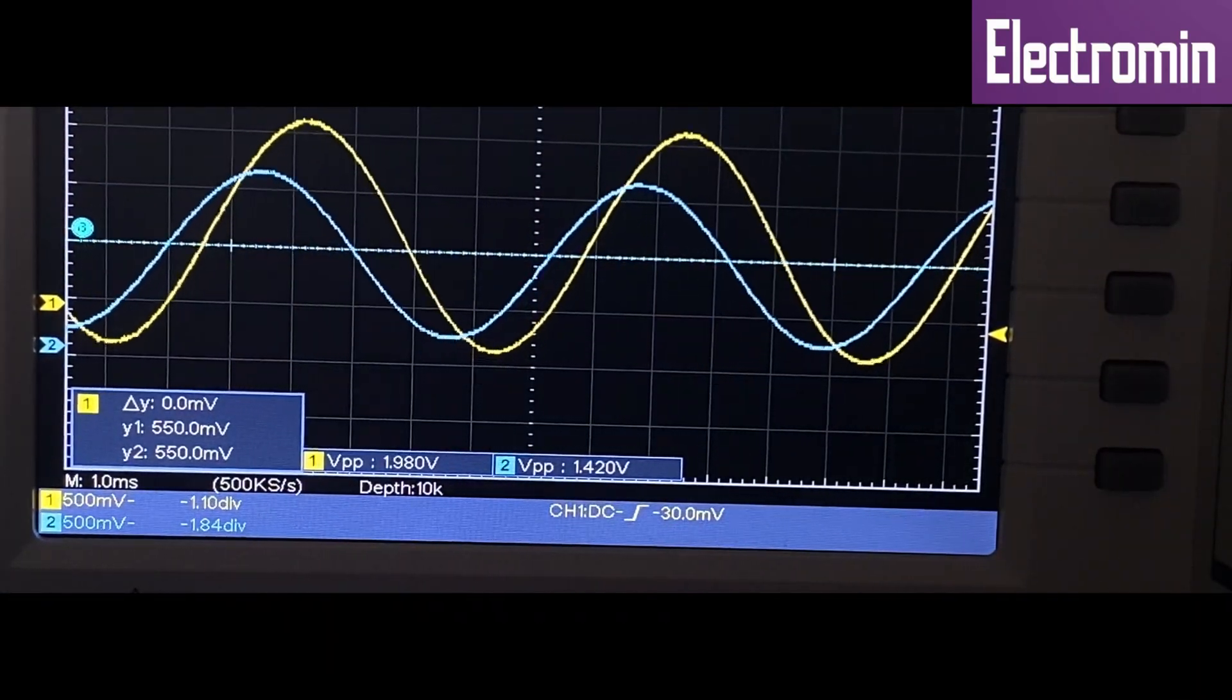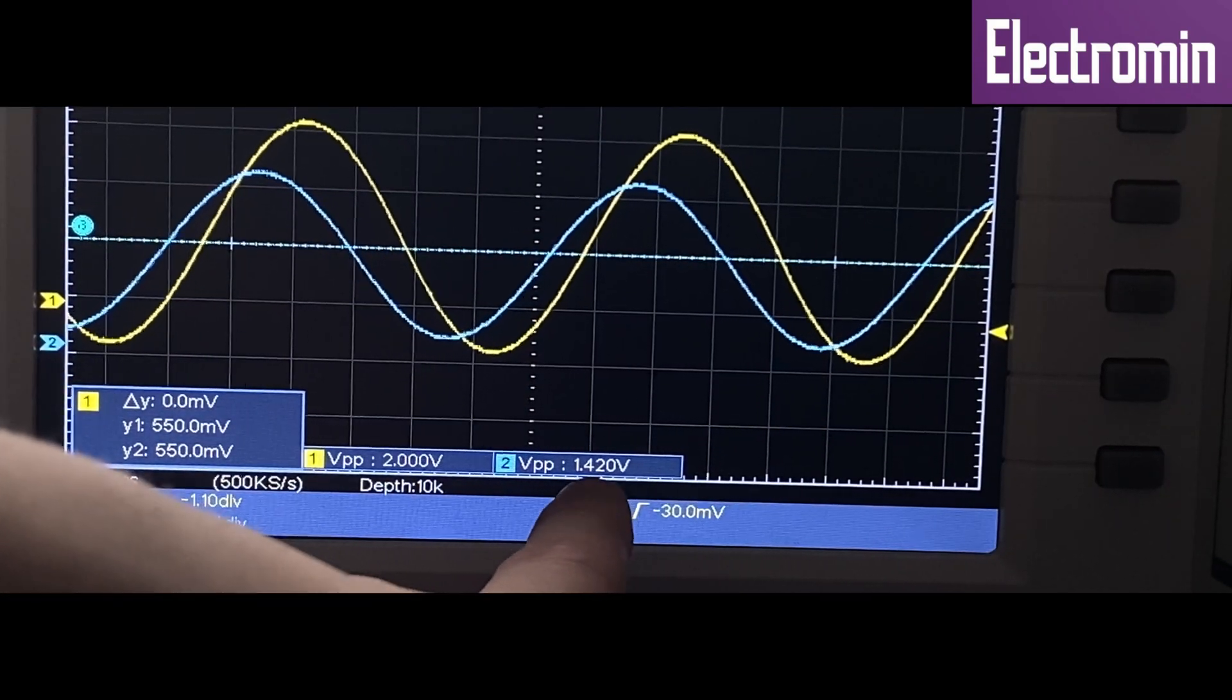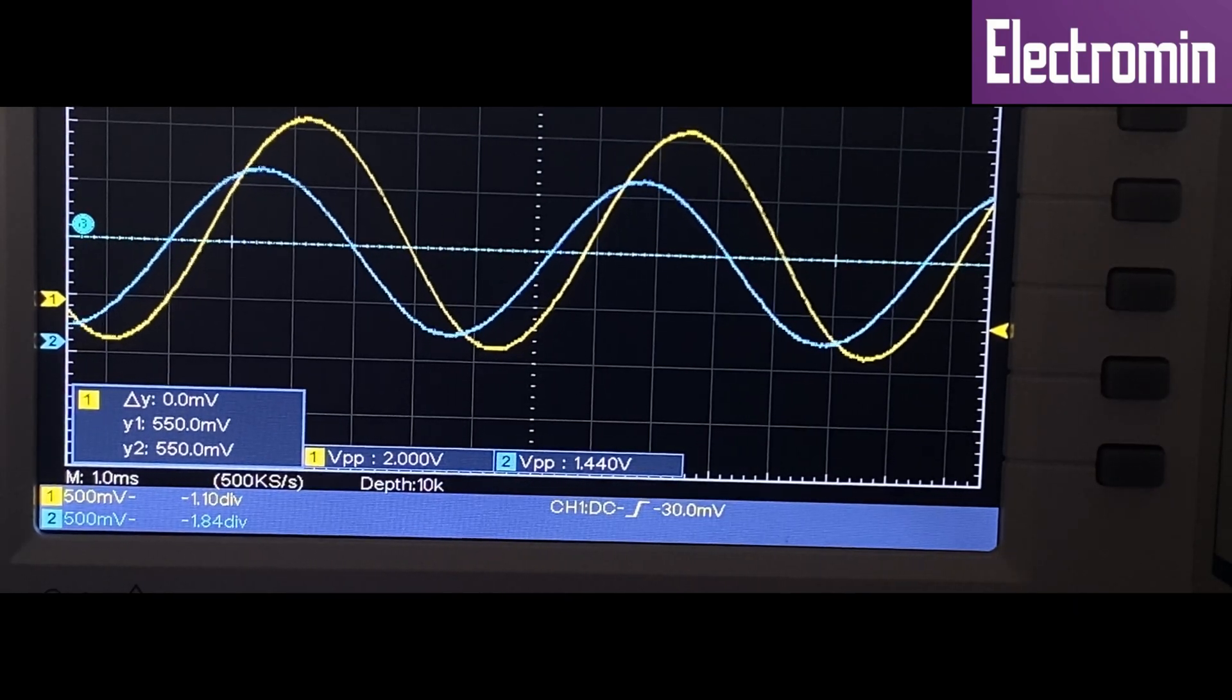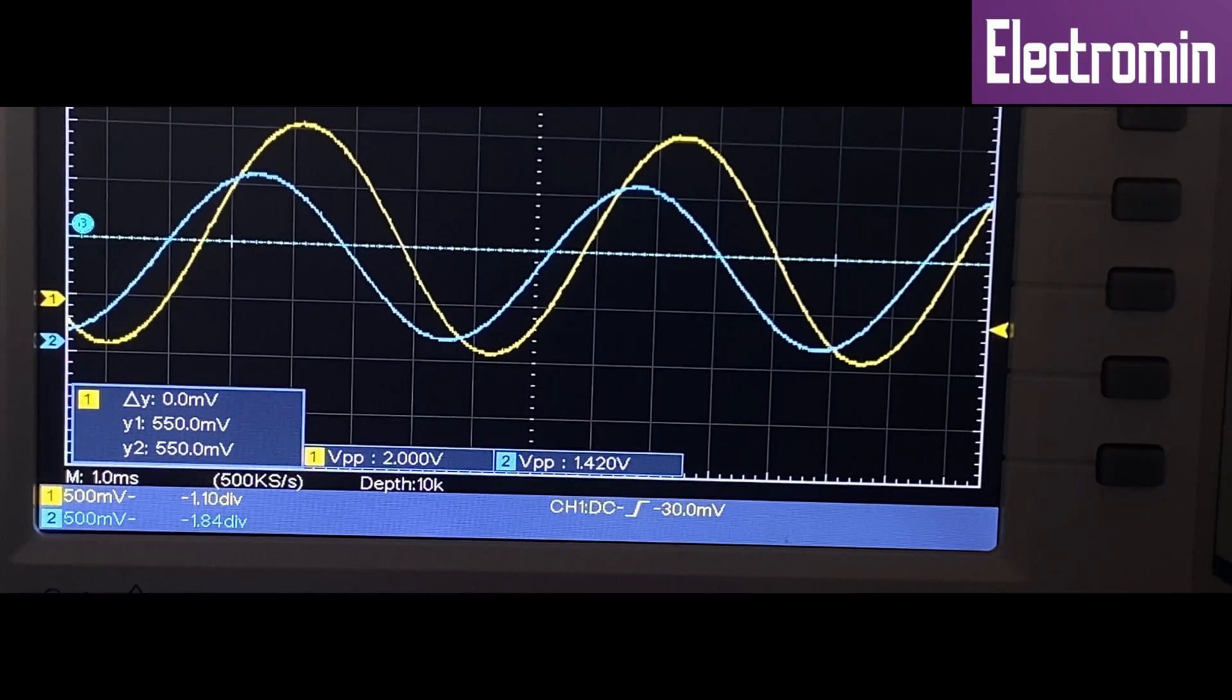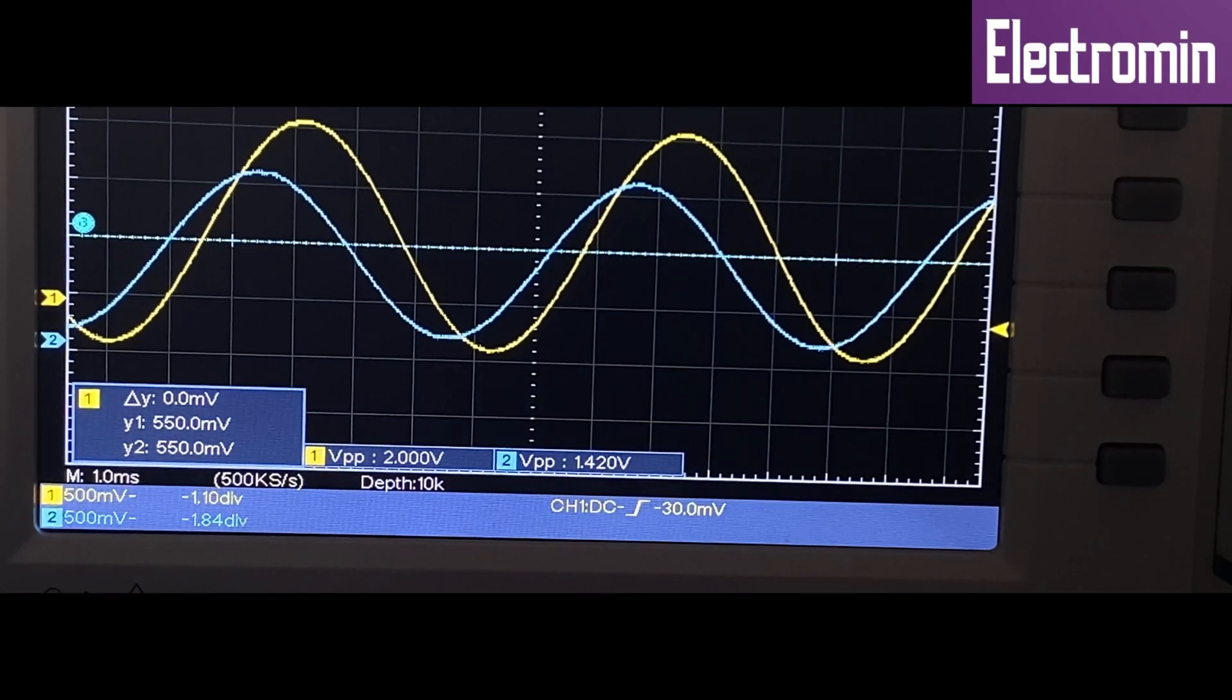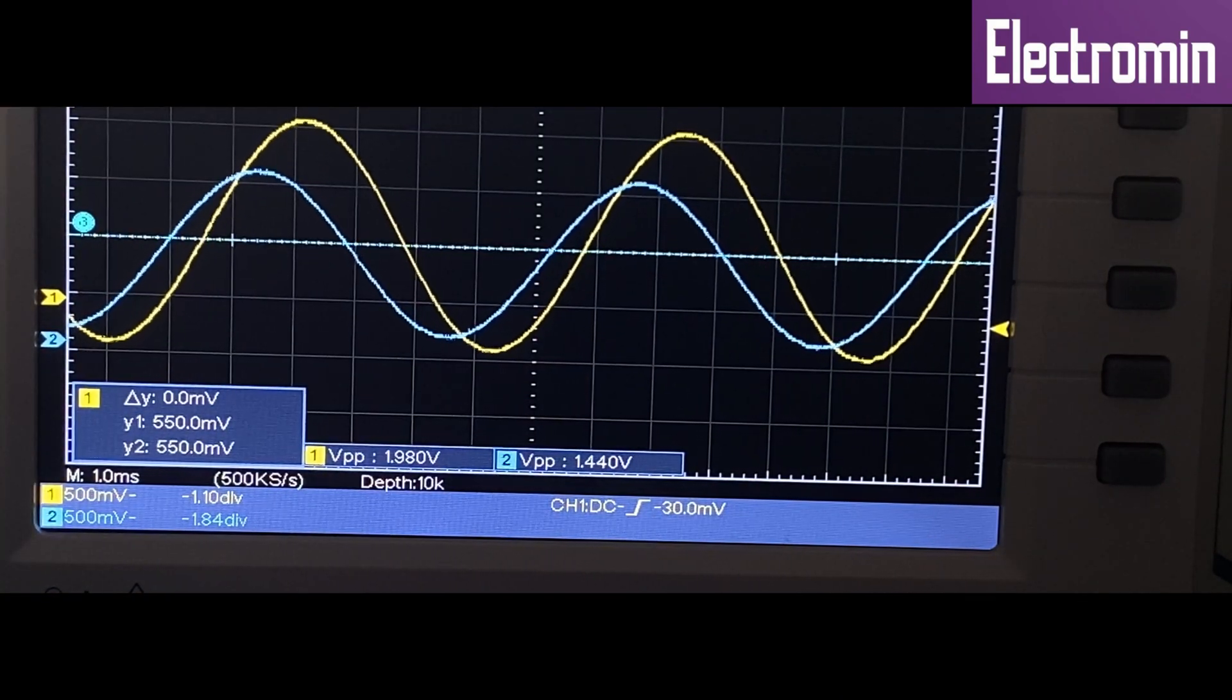As you can see, right now the input voltage is at two volts and the output voltage is at 1.4 volts. If we divide the output voltage by the input voltage, the ratio is approximately 0.7 or 70 percent, which means our input signal is attenuated by 70 percent and reached a voltage peak to peak of 1.4 volts.